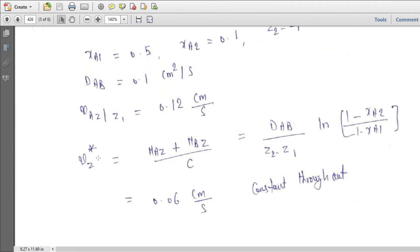vZ star actually. So NAZ plus NBZ upon C. So we can calculate here DAB over z2 minus z1 times ln 1 minus xA2, this is 0.06 centimeter per second. So this is you can say the average velocity.